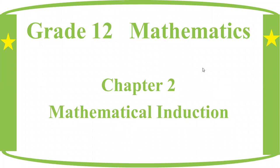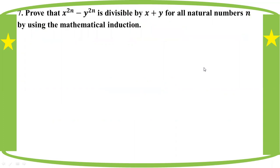This is the second one. Prove that x to the power 2n minus y to the power 2n is divisible by x plus y, for all natural numbers n, by using mathematical induction. This is number 2 and number 4.